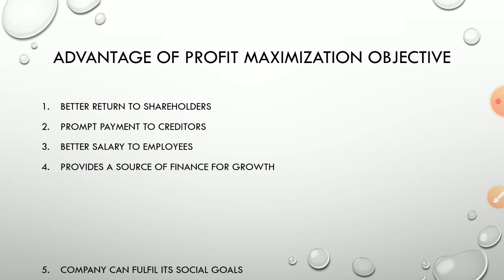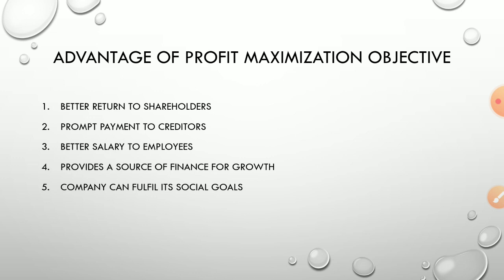Profit also helps the company fulfill its social goals. A company operates in and is responsible to the society in which it operates. Social goals such as construction of roads, bridges, bus stands, schools, and hospitals come under Corporate Social Responsibility. These goals can be achieved by the company only if it is earning a profit; without profit, it is not possible to fulfill these social goals.